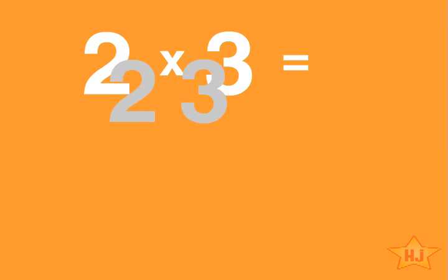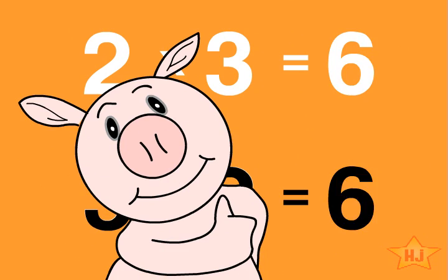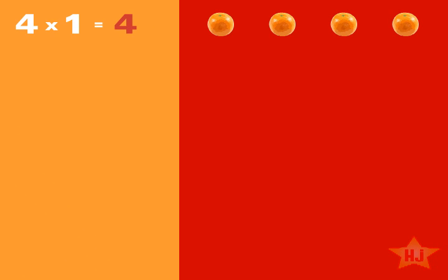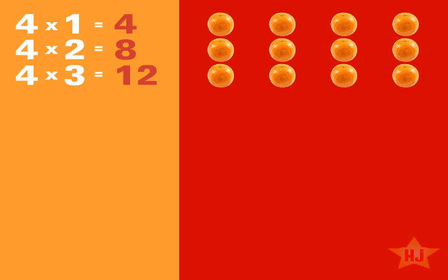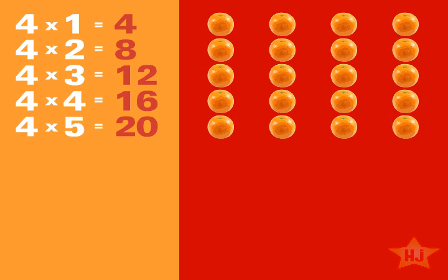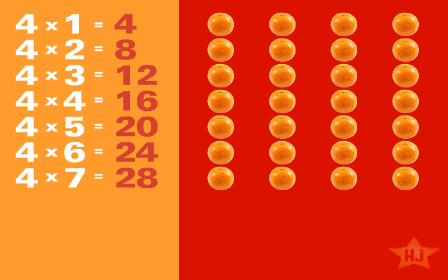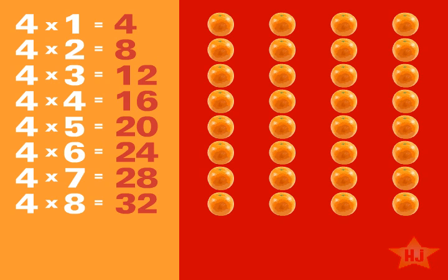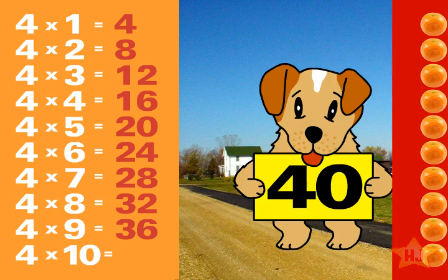you can even reverse the numbers and you'll get the same product. 4×1=4, 4×2=8, 4×3=12, 4×4=16, 4×5=20, 4×6=24, 4×7=28, 4×8=32, 4×9=36, and 4×10=40.